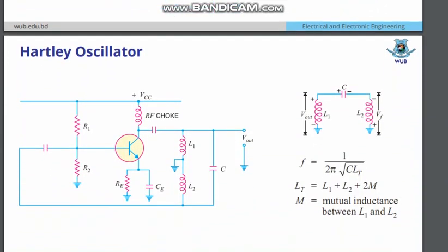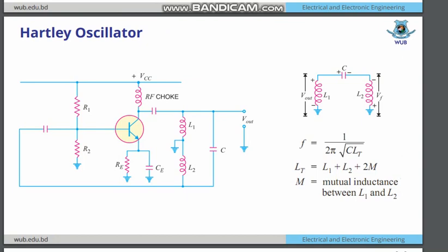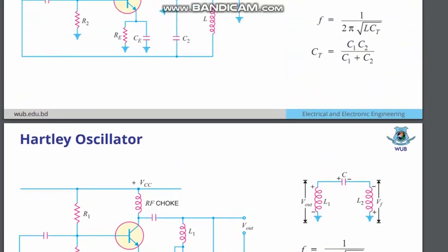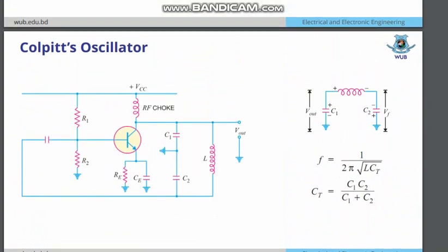The next oscillator is the Hartley oscillator. It is quite similar to the previous one, but what is the difference between these two? In Colpitts oscillator — as far as the C concerns — capacitor gangs are used to produce the feedback voltage and also to serve as the tank circuit part.